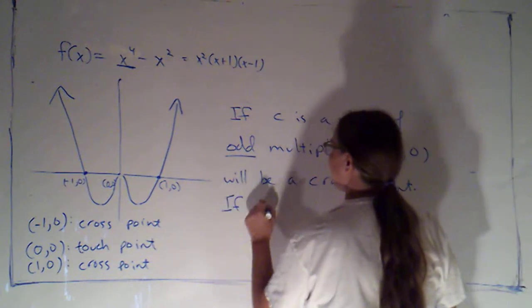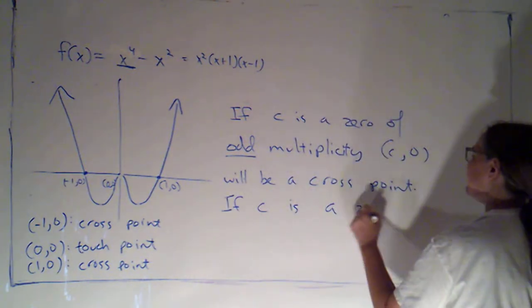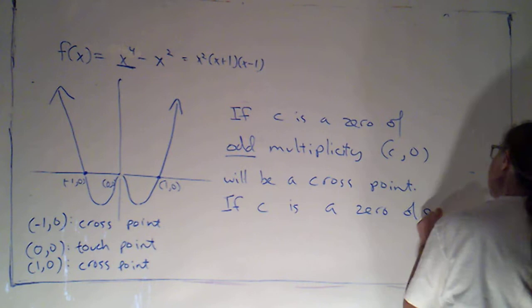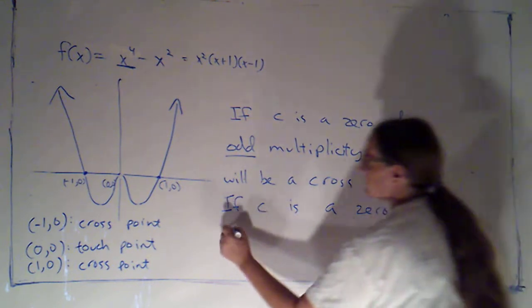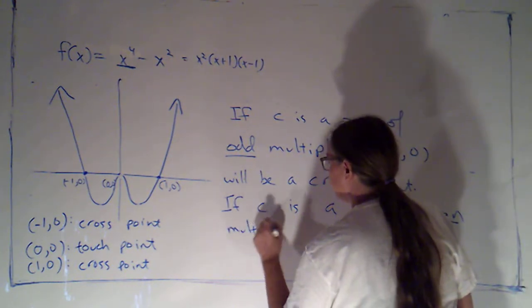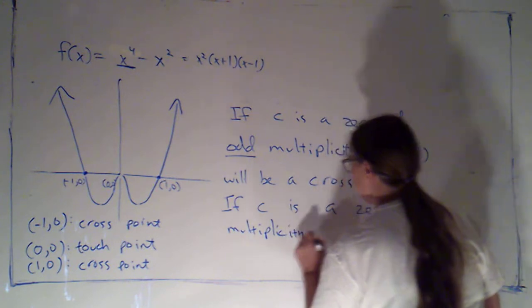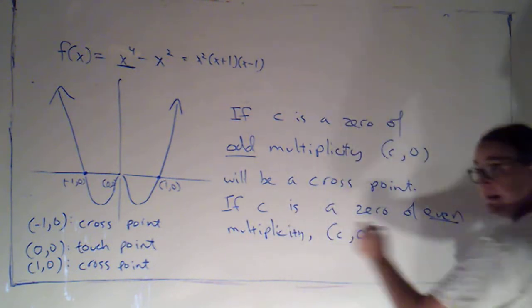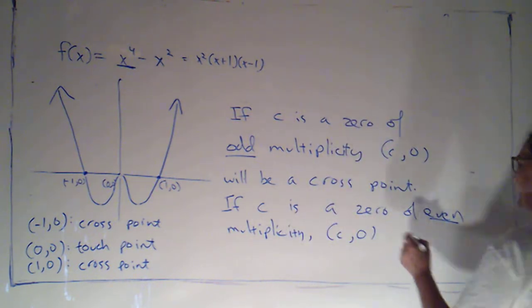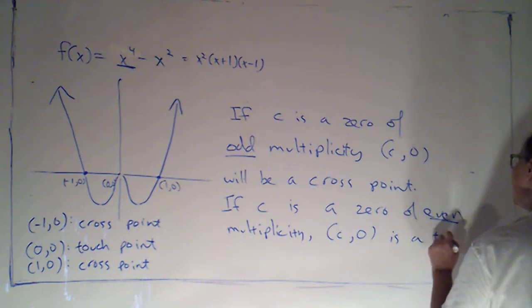On the other hand, if c is a zero of even multiplicity, then c, 0, the corresponding x-intercept, is a touch point.